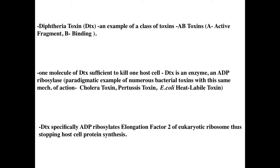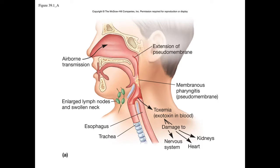In the case of diphtheria toxin, what's specifically ADP-ribosylated is elongation factor 2 — part of the eukaryotic ribosome. Sticking this ADP ribose onto elongation factor 2 makes the eukaryotic ribosome absolutely nonfunctional. Because DTX is an enzyme, it can ADP-ribosylate elongation factor over and over again, basically eliminating protein translation within the host cell and killing it.